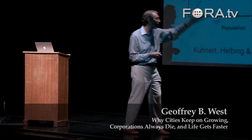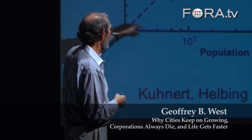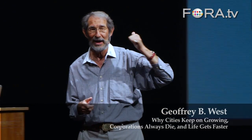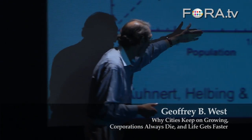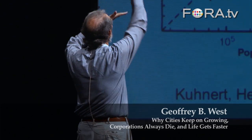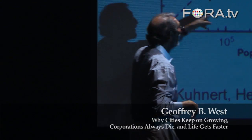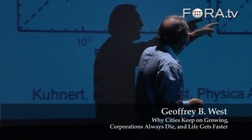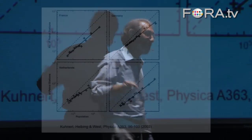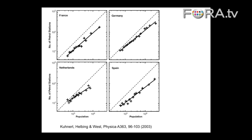These are some European collaborators I had. Gas stations as a function of size — this is the same plot I showed you in biology, except for gas stations. Size is measured by population, going up by factors of 10. And what you see is pretty good scaling. You tell me the size of a city in Spain, I will tell you how many gas stations it has. It scales in all these countries, and in a similar way in each country.